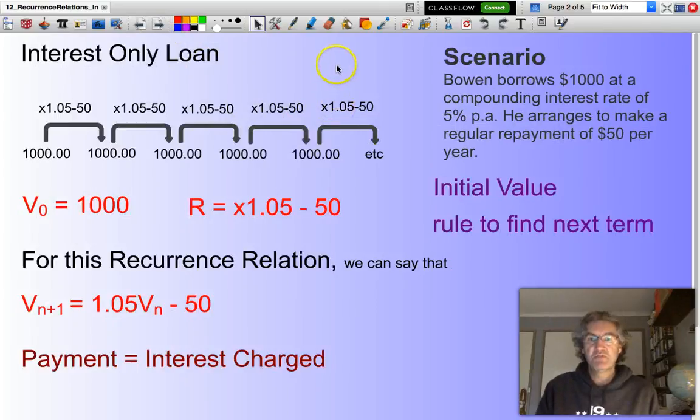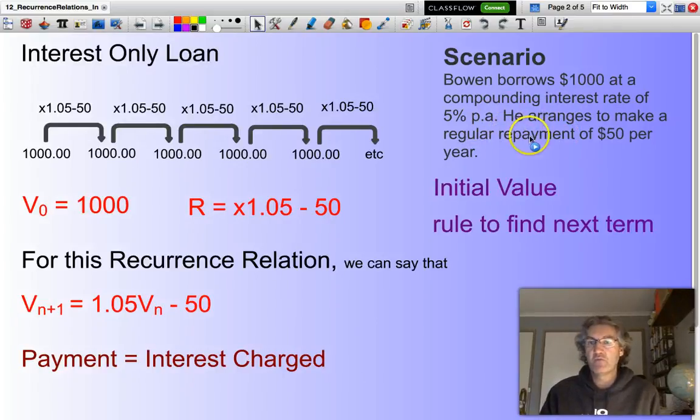Let's look at this particular situation. Bowen borrows $1,000 at a compounding interest rate of 5% per annum. He arranges to make a regular repayment of $50 per year. If I set this up in terms of a recurrence relation, we notice that we would be increasing the amount owed by 5% every year, and our 5% of $1,000 will be $50.